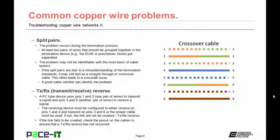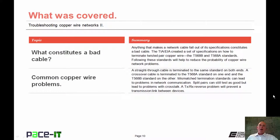Then there's the TX-RX reverse, or the transmit-receive reverse problem. A PC type device always uses pins 1 and 2 as one pair of wires to transmit a signal and pins 3 and 6 as another pair of wires to receive a signal. The receiving device must be configured to either receive on pins 1 and 2 and transmit on pins 3 and 6, or the proper cable must be used, like a crossover cable. If not, the link will not be created — that is a TX-RX reverse. If the link fails to be created, check the pinout on the cables to ensure that a TX-RX reverse has not occurred.